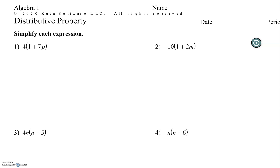Hello, mathematicians. Today we are going to talk about the distributive property. The distributive property is when you have multiplication outside of a set of parentheses that has addition or subtraction on the inside. So we distribute that multiplication throughout the whole thing.